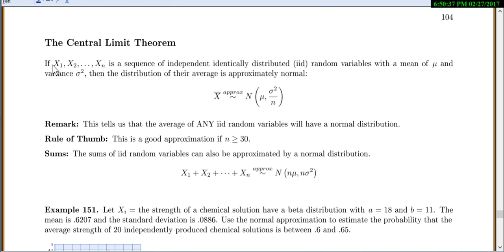The central limit theorem tells us that if x1, x2 up to xn are a sequence of independent random variables, and it's important that they're independent and identically distributed (IID), which means they all have the same shape, the same mean, and the same variance.